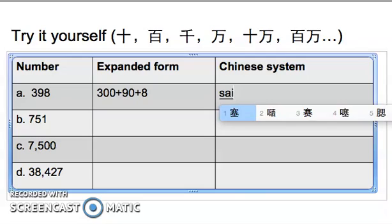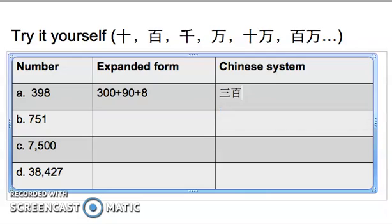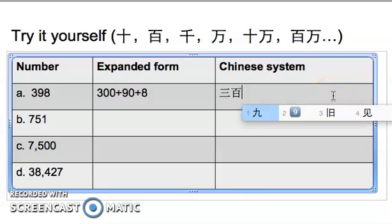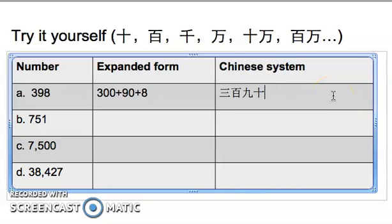And then nine tens. There's nine of the tens, right? So it will be jiu shi, and then just ba, jiu shi ba. San bai jiu shi ba. That will be the correct Chinese, the written form for san bai jiu shi ba, three hundred and ninety-eight.